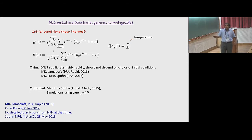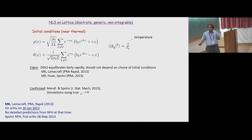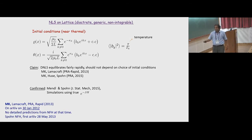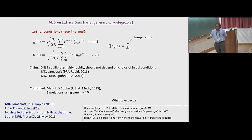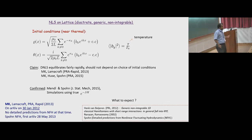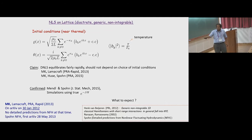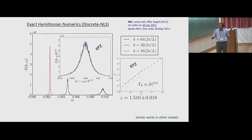An interesting point: our paper was on arXiv on January 2012, and at that time we had no nonlinear fluctuating hydrodynamics. We didn't have detailed predictions from NFH, but we knew that for low-dimensional systems one should expect anomalous exponents. The first NFH paper by Spohn appeared on May 28th. So there was a gap in trying to understand the details of what we were seeing.